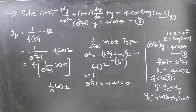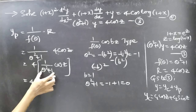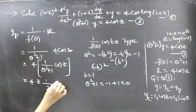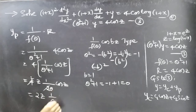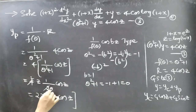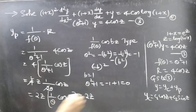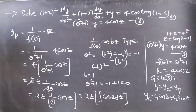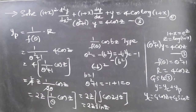Since substitution gives 1/0, we use the derivative method. yp = 4·(z/(d/dθ(θ²+1)))·cos(z) = 4·(z/(2θ))·cos(z) = 2z·(1/θ)·cos(z). Now 1/θ is the integral operator, so we integrate cos(z) to get sin(z). Therefore yp = 2z·sin(z).